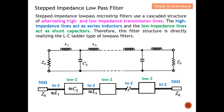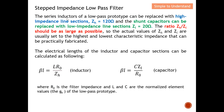The series inductor of a low pass filter can be replaced with a high impedance line section — for example, Z_high can be 120 ohm. The shunt capacitor can be replaced with a low impedance line section — for example, Z_low can be as low as 20 ohm. The ratio Z_high over Z_low should be as large as possible so the high and low are clearly distinguished. The actual values are usually set to the highest and lowest characteristic impedance that can be practically fabricated.